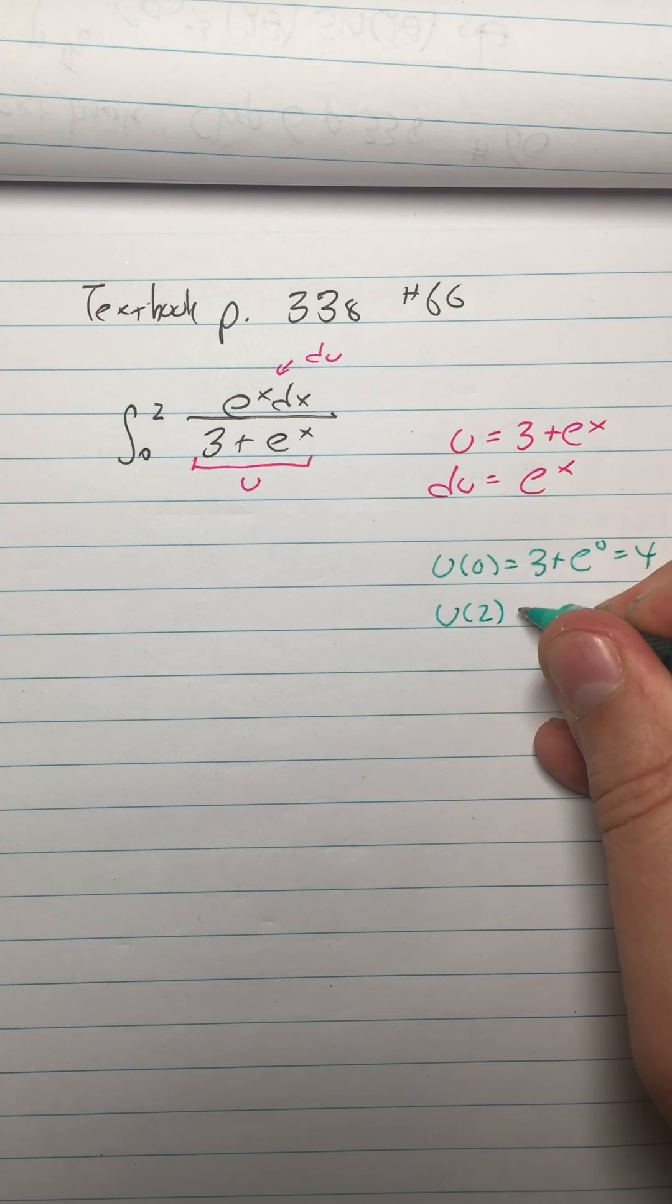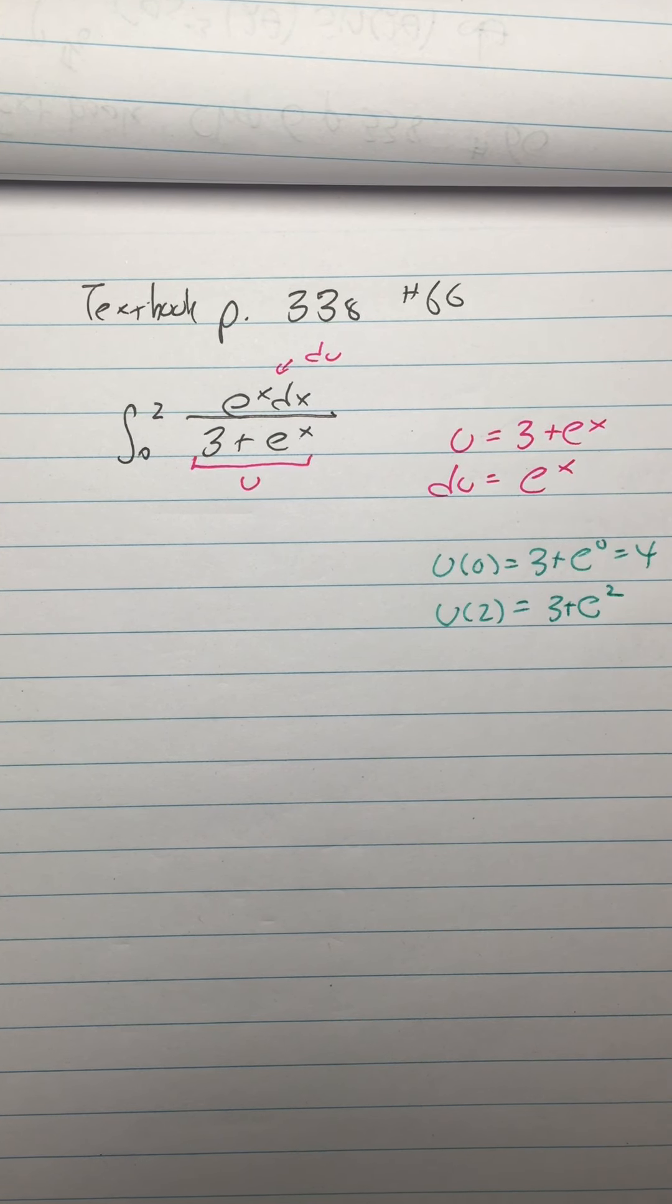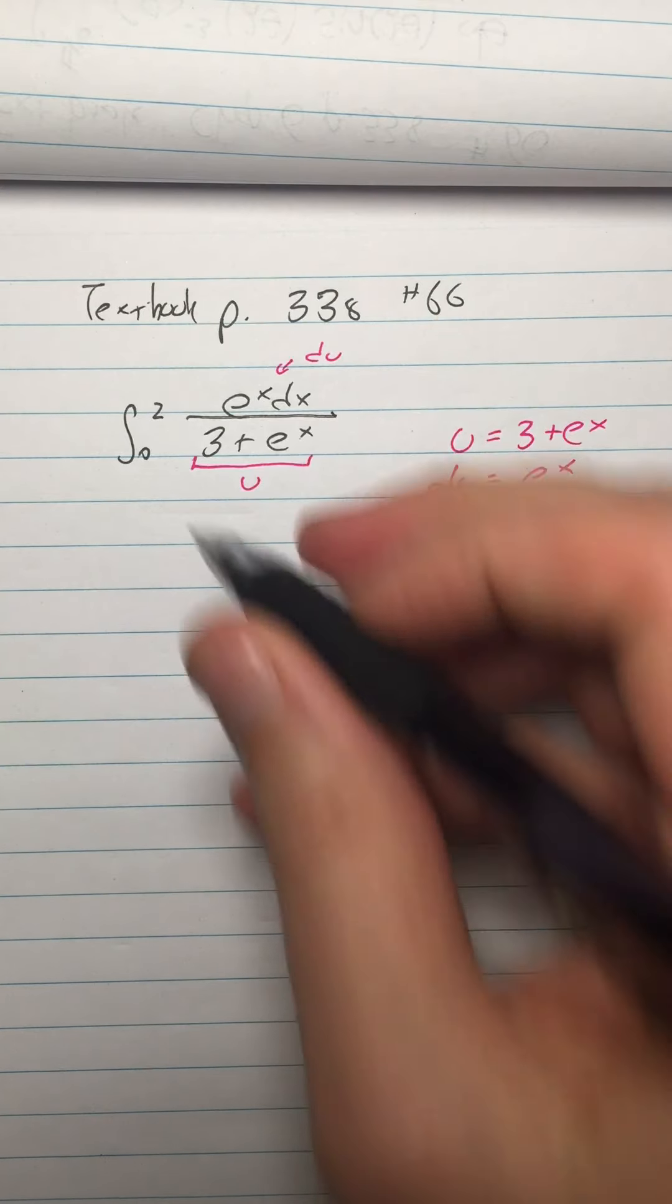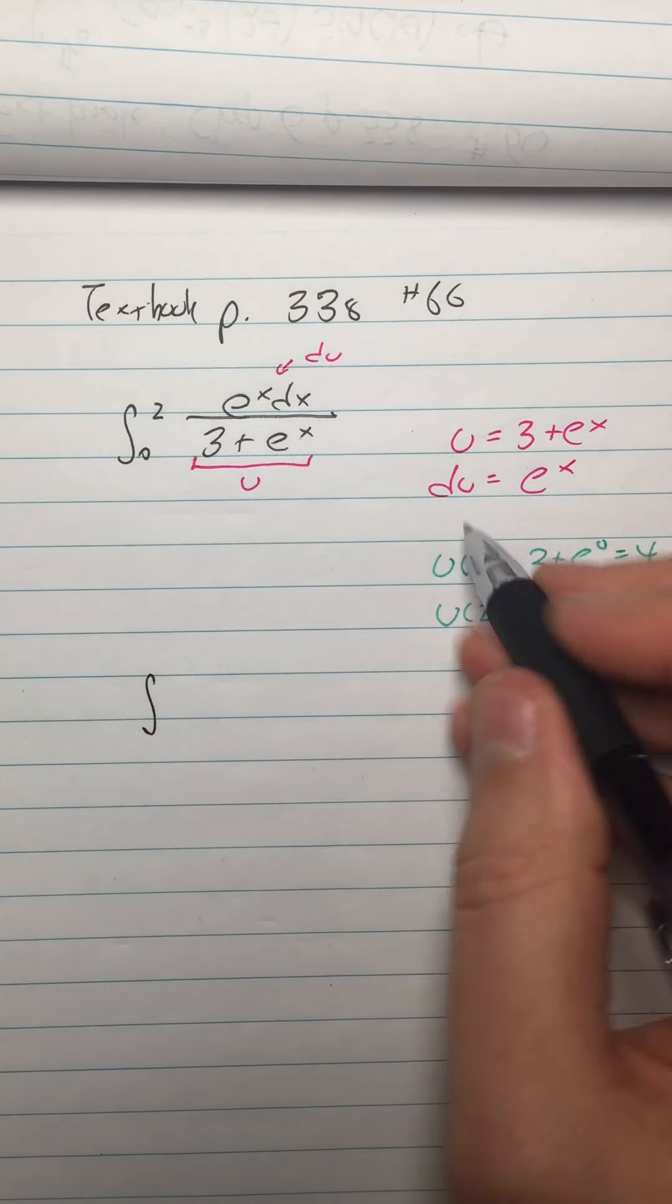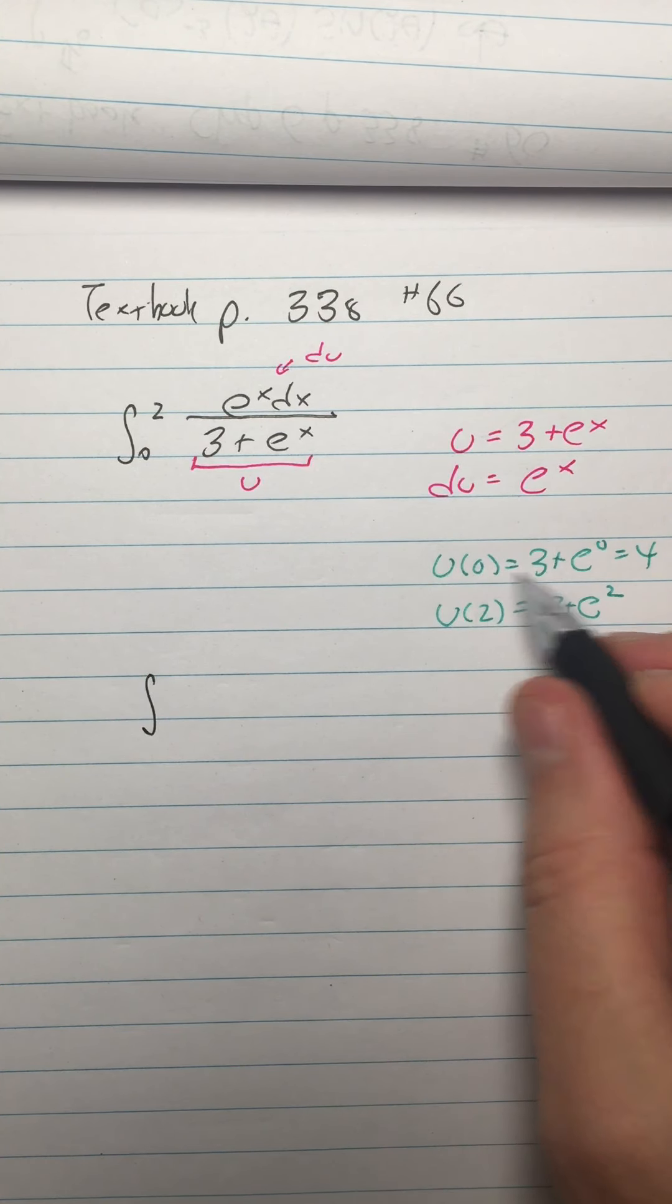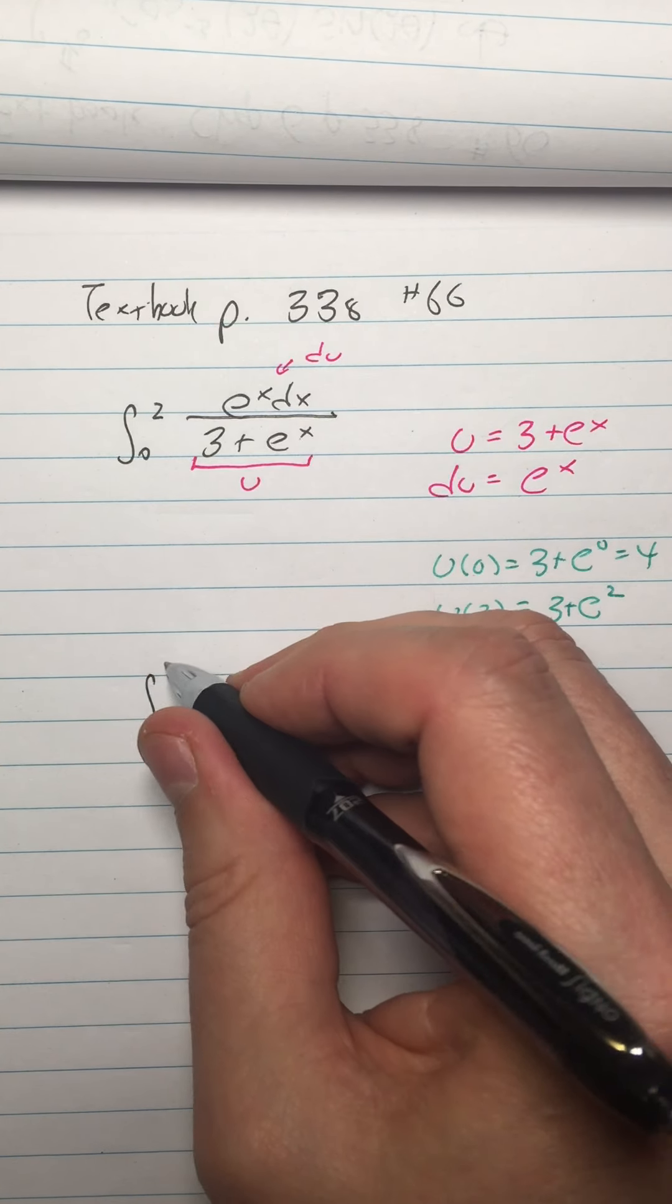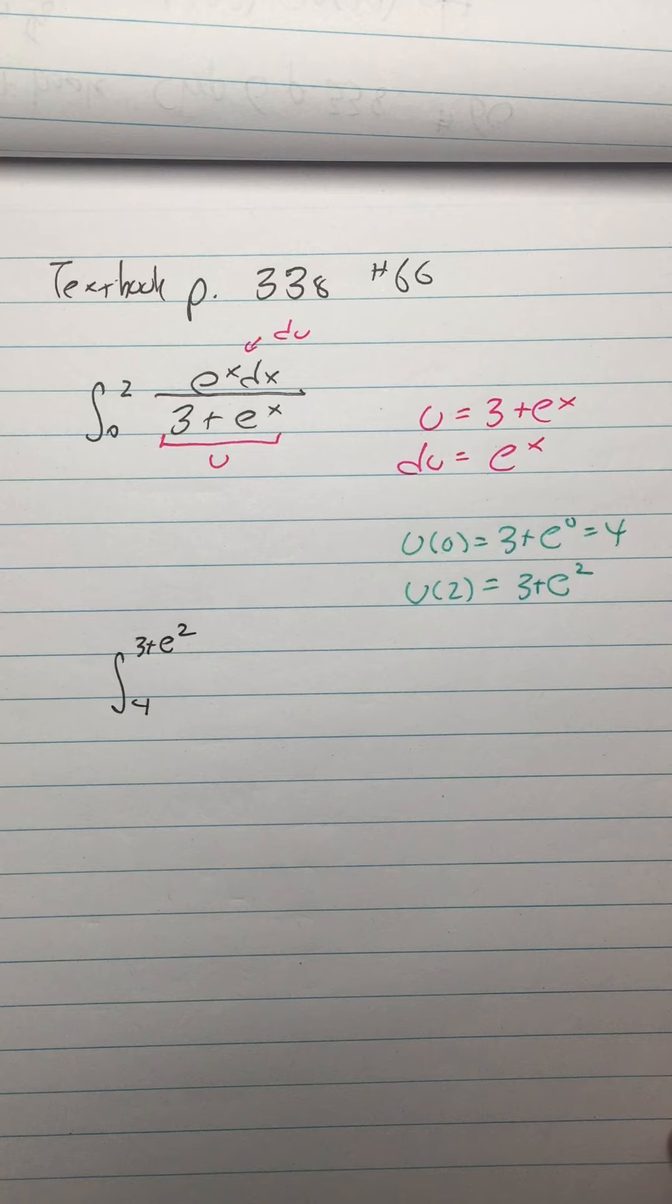What is u of 2? That would be 3 plus e squared, which let's not simplify that. Let's just leave it. All right, so then my integral here, as I do the substitution for u, I'll also substitute the limits. So now my limits are going to be, the 0 is going to become a 4, the 2 is going to become 3 plus e squared.